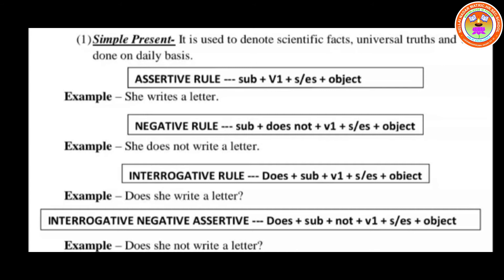V1 means the verb in present tense, then S or ES is added, plus the object. Example: 'She writes a letter.' For the negative rule: Subject + does not + V1 + object. Example: 'She does not write a letter.' For the interrogative rule: Does + Subject + V1 + S or ES + object. Example: 'Does she write a letter?'